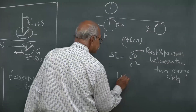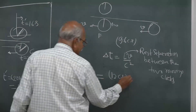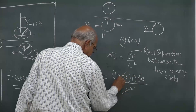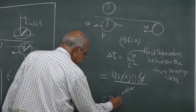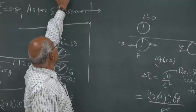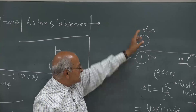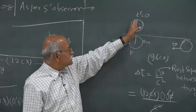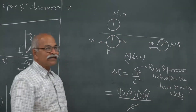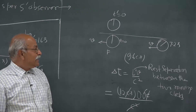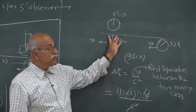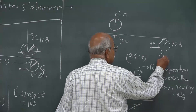The rest separation between the two S clocks — the separation in the frame where they are at rest, which is the S frame — is 12 light-seconds. So the time lead of clock G over clock F is: 12 light-seconds × 0.6c / c² = 7.2 seconds. So at t prime equal to 0, when clock F reads t equal to 0, clock G is already reading 7.2 seconds. After some time, clock G comes to the position of clock A.